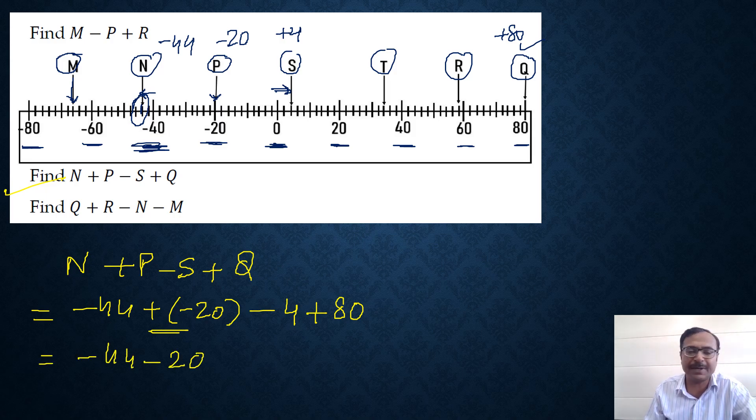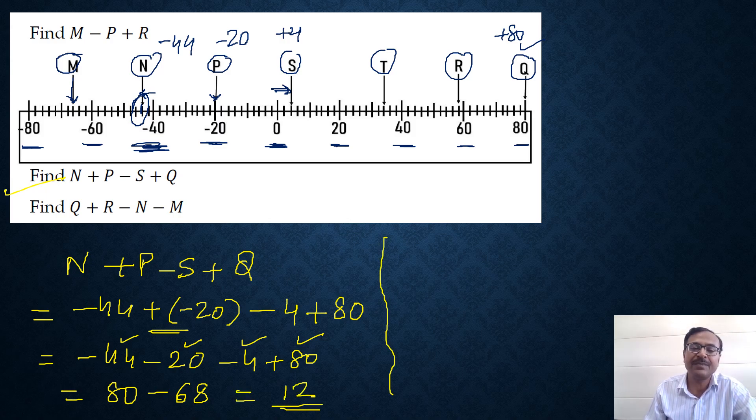We have to simplify this. Minus 44 minus 20, plus and minus become minus, then minus 4 and plus 80. Only 80 is positive, and 44, 20, and 4 are negative. If you add all these, 44 and 20 is 64 plus 4 is 68, so minus 68. 80 minus 68 happens to be 12, or plus 12 is the answer.